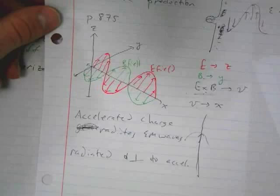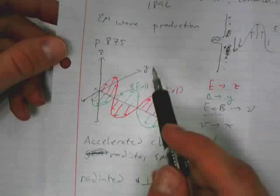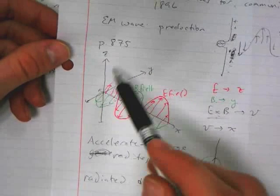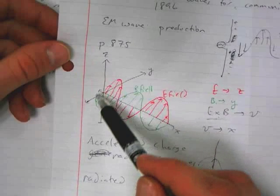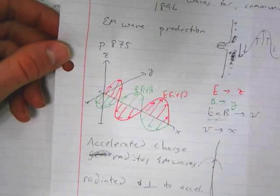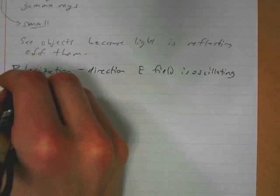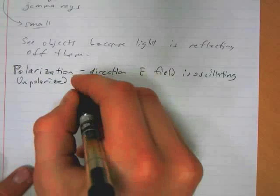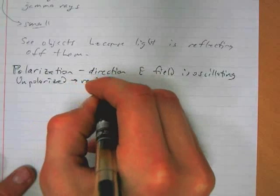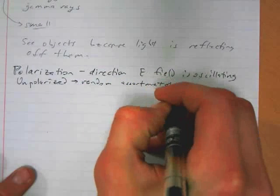Generally, most light sources are unpolarized, meaning there might be one wave that's oscillating in the Z direction, another wave oscillating in the Y direction, another one oscillating at some angle in between the Y and Z direction, and on average they're polarized in all sorts of different directions. So that's what it means to be unpolarized — there's a random assortment of polarizations going on.